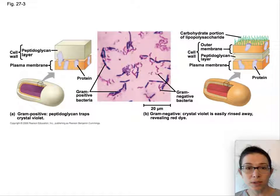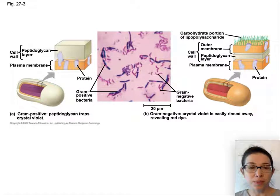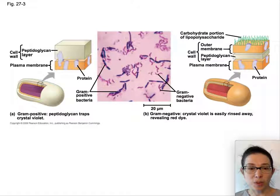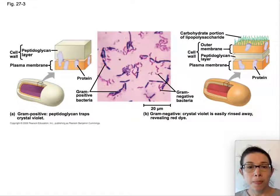Early on, it was discovered that we could stain bacteria with a stain called crystal violet, and we could distinguish between two different kinds of bacteria by their cell wall and what it was composed of. A researcher found that if he put crystal violet on the bacteria, some would take up the crystal violet and retain it, turning up as bright purple. These were termed gram-positive bacteria. Alternatively, the other bacteria would wash away that violet dye, and these were called gram-negatives — they are not stained dark purple.